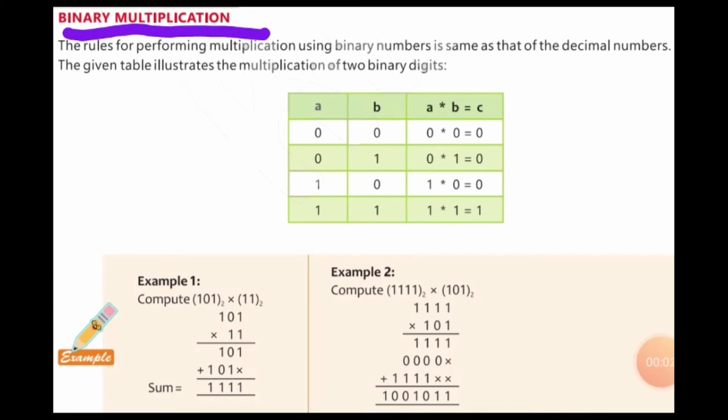Binary multiplication is also based on the concept of addition. Initially, we have certain rules which are the same as those rules which we follow in decimal numbers. You can see 0×0 is 0, same rule.